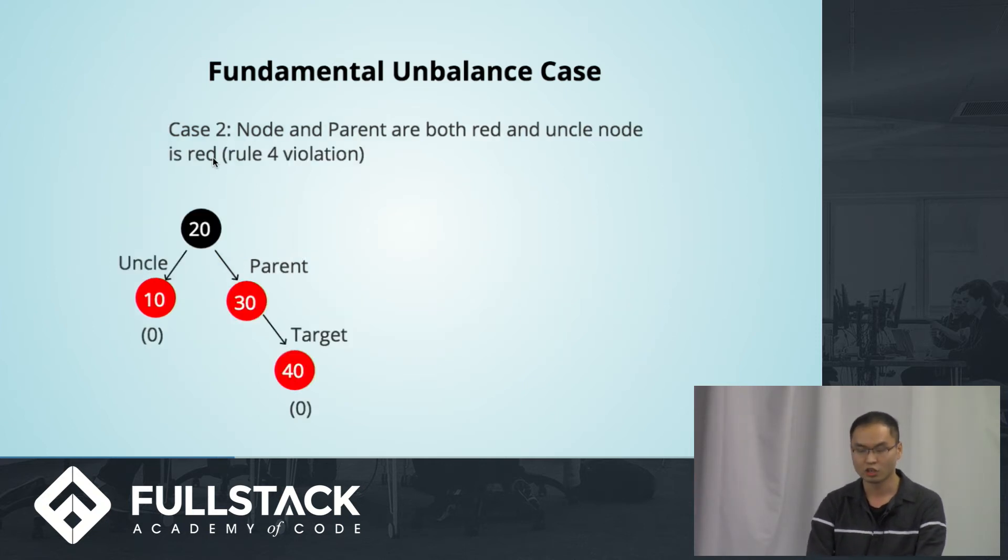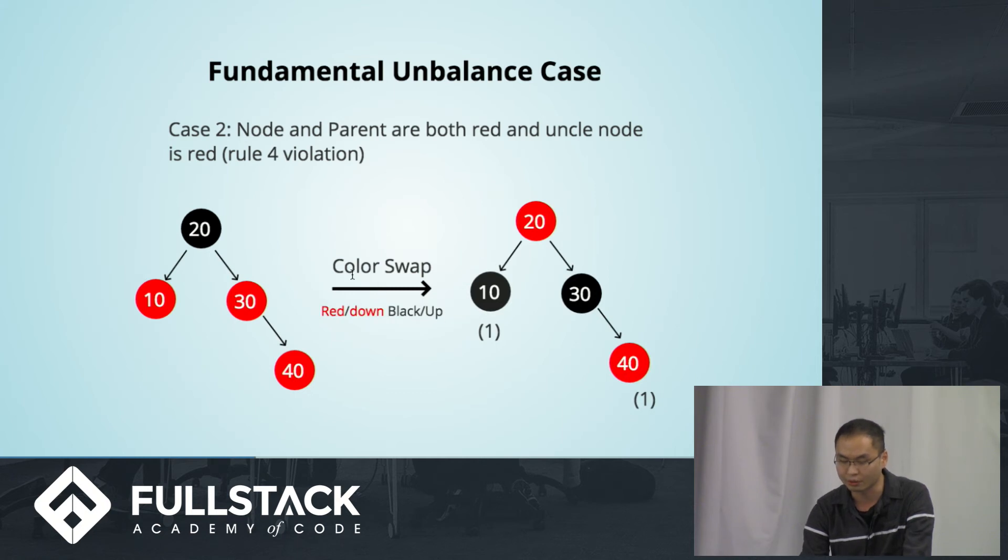For case 2, node and parent are both red, but the uncle node is red. Right here, the uncle node is red. So how do you solve this problem to return this back to a valid red-black tree? Do you think you should do a tree rotation here? But no, you shouldn't do it. It's actually other way around for this problem. Just do a simple color swap. And now you have a valid red-black tree.